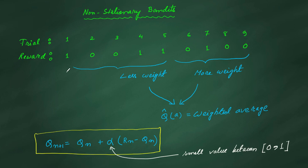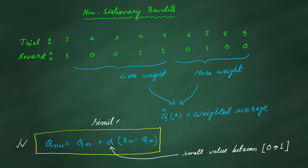What we have to do instead is take a weighted average of the rewards obtained for a particular action over time. While doing weighted average, we give more weight to recent rewards than to previous ones, because the action value is changing over time. The formula on screen is: qn+1 = qn + alpha multiplied by (rn minus qn), where alpha is a small number between zero and one.